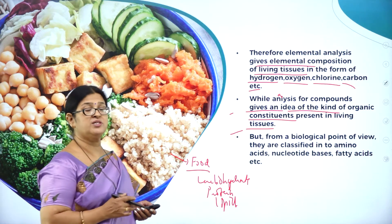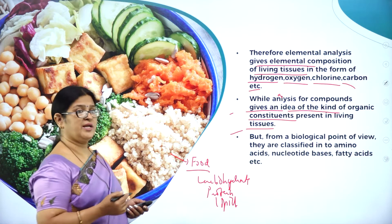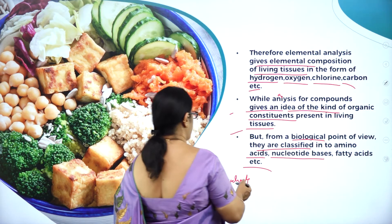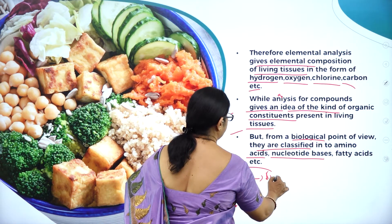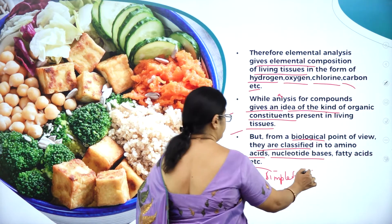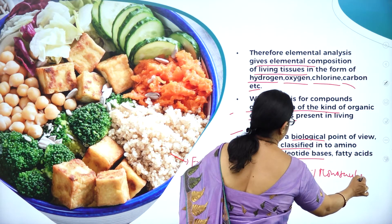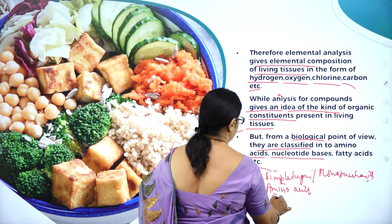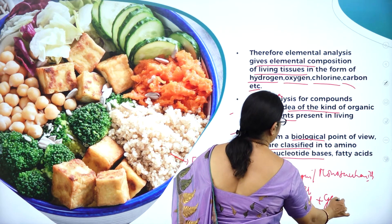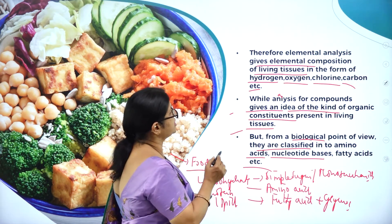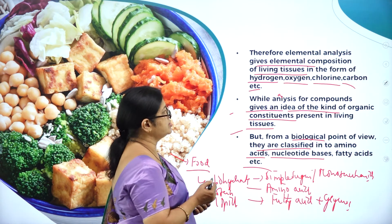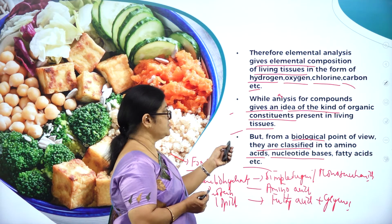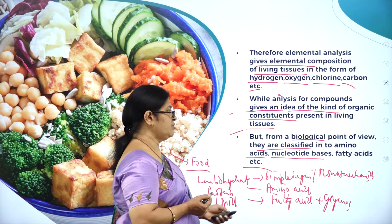Deficiency in any of these nutrients may lead to disorders or diseases. From a biological point of view, organic compounds are classified into amino acids, nucleotide bases, and fatty acids. The building blocks of carbohydrates are simple sugars — monosaccharides. For proteins, it is amino acids. For lipids, it is fatty acid plus glycerol. Elemental analysis gives the elemental composition of living tissues, while analysis of compounds gives an idea of the organic constituents present.